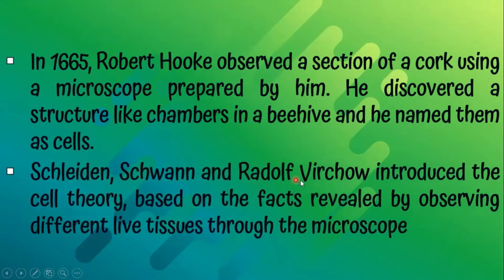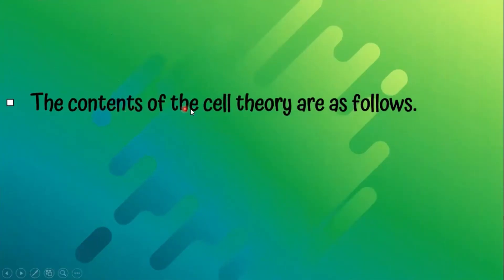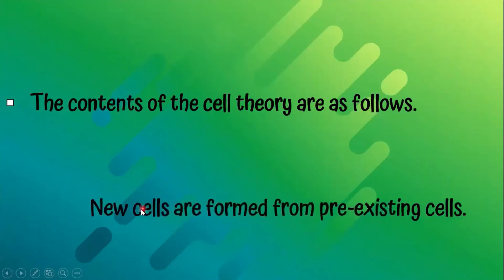Schleiden, Schwann and Rudolf Virchow introduced the cell theory based on the facts revealed by observing different life tissues through the microscope. The contents of the cell theory are as follows: new cells are formed from pre-existing cells.